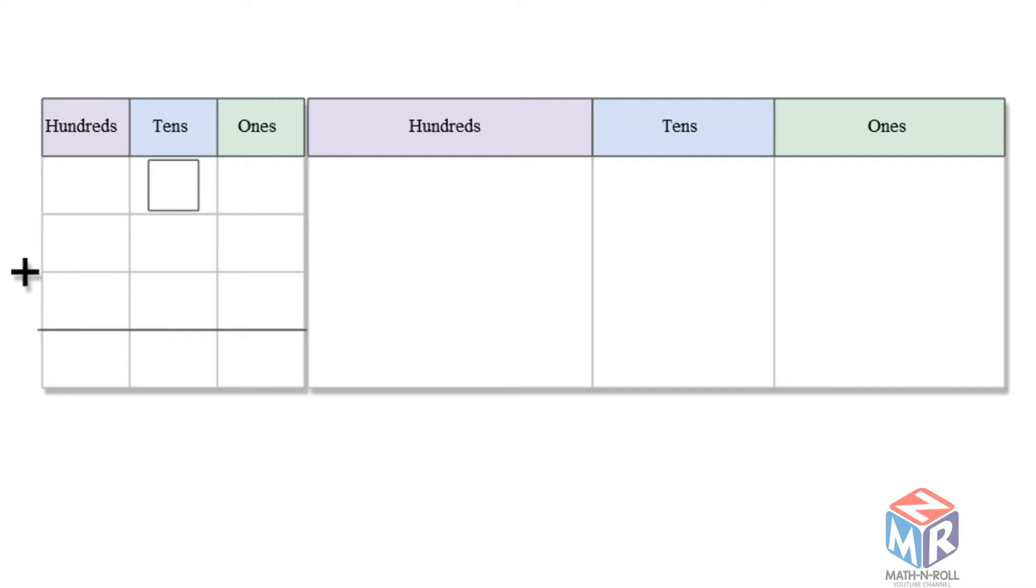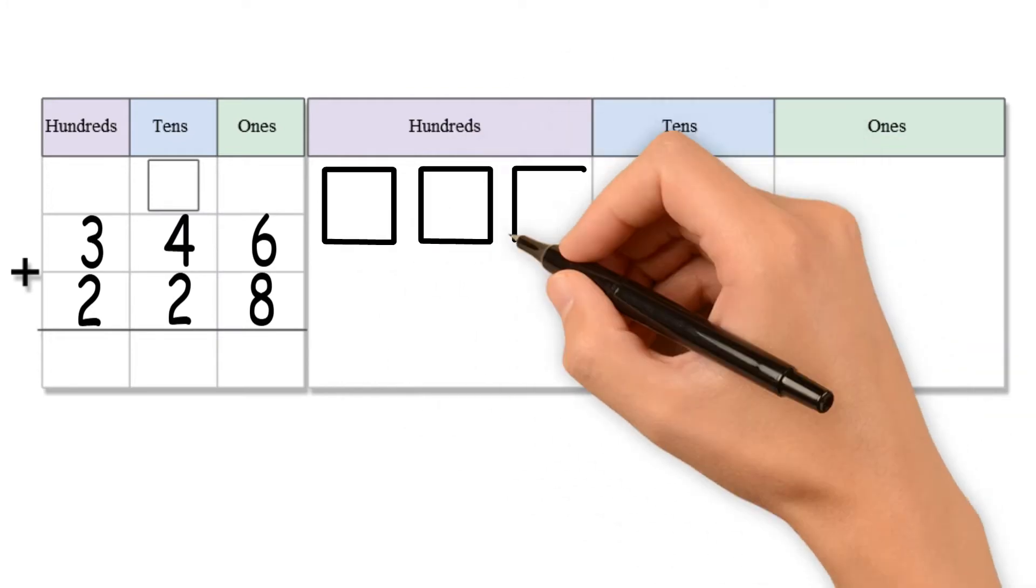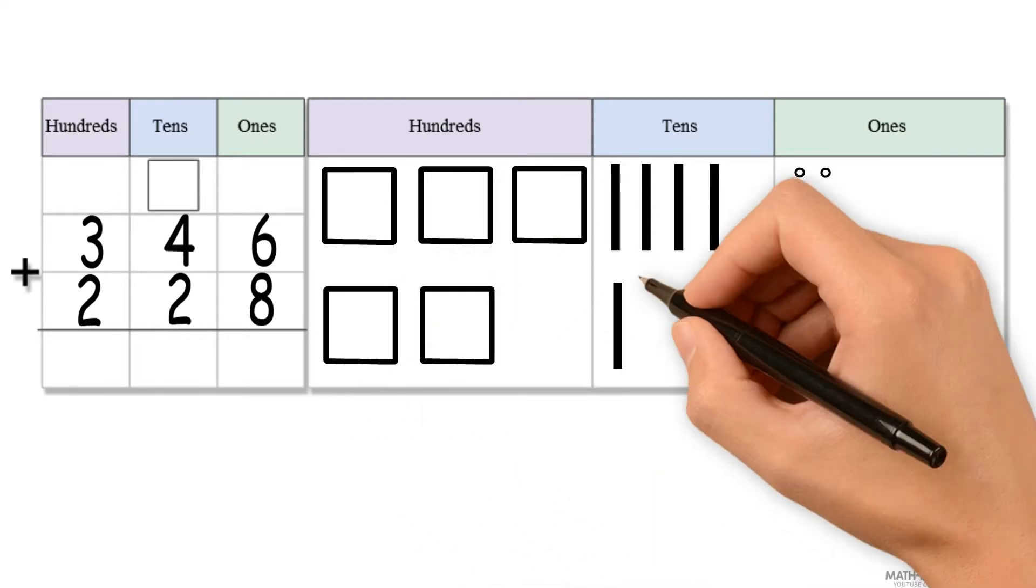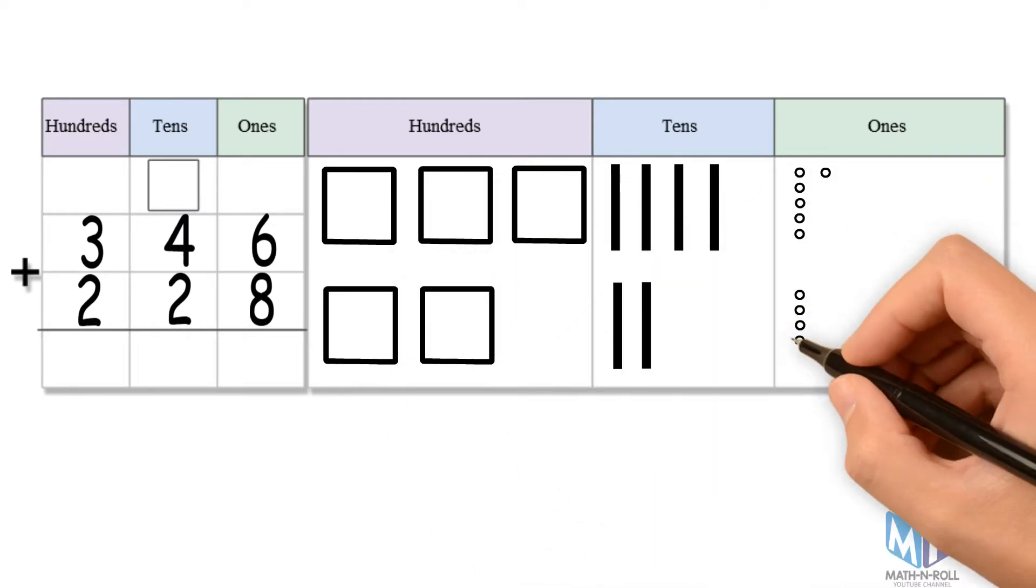Let's try another example, 346 plus 228. Let's draw it, 346 has three hundreds, four tens, and six ones. 228 has two hundreds, two tens, and eight ones.